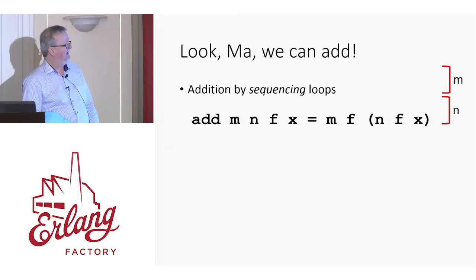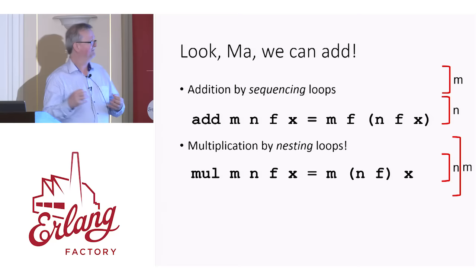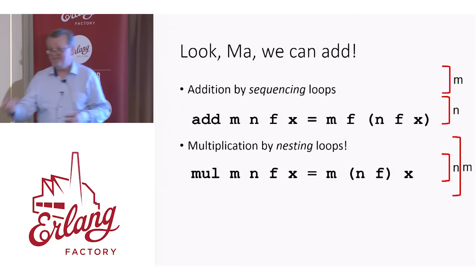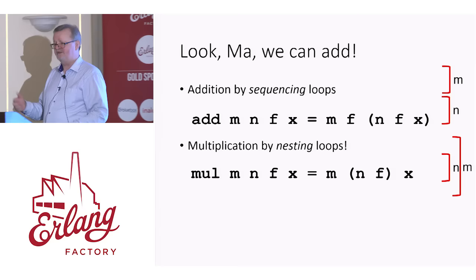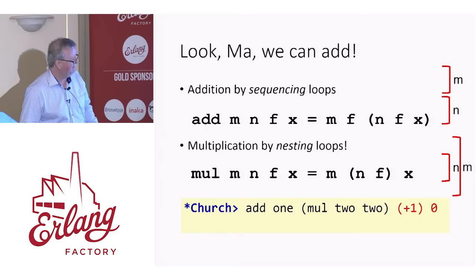How will I add two integers? I need to execute my loop body m plus n times. I can do that by first executing it n times and then executing it m times on the result. So add m n is a function that takes a loop body f and a starting value x and iterates the loop m plus n times. For multiplication — how can I execute a loop body m times n times? Nested loops: an inner loop that calls f n times and an outer loop that calls all of that m times means in total I'm executing f m times n times. This gives me a way of adding and multiplying these functions that represent numbers.